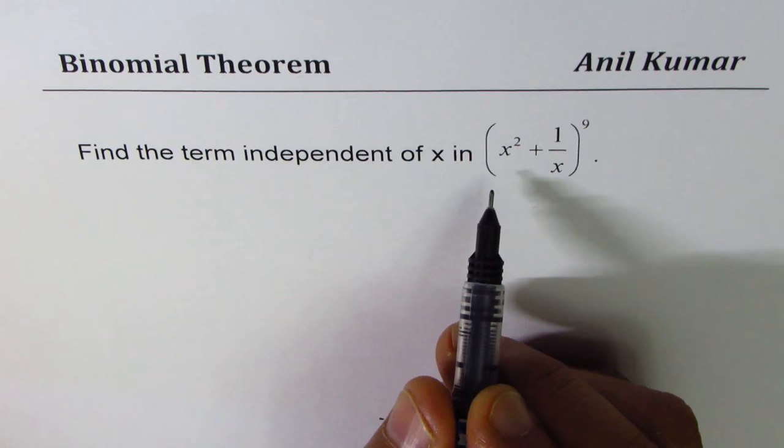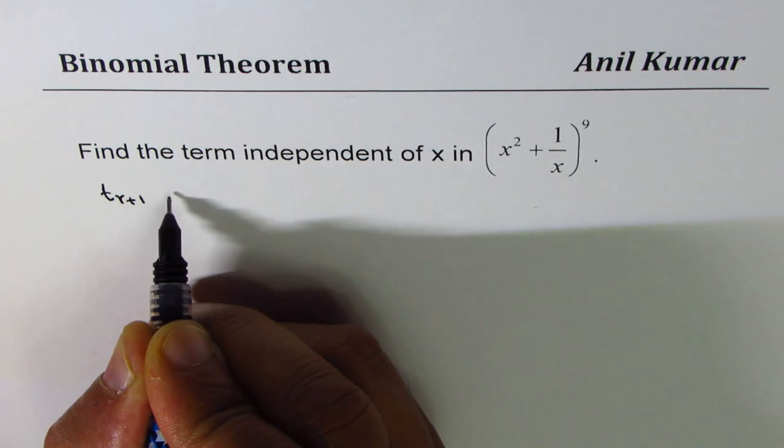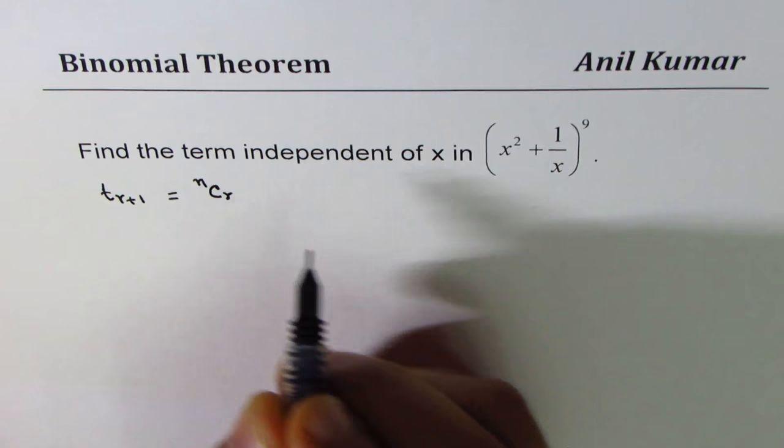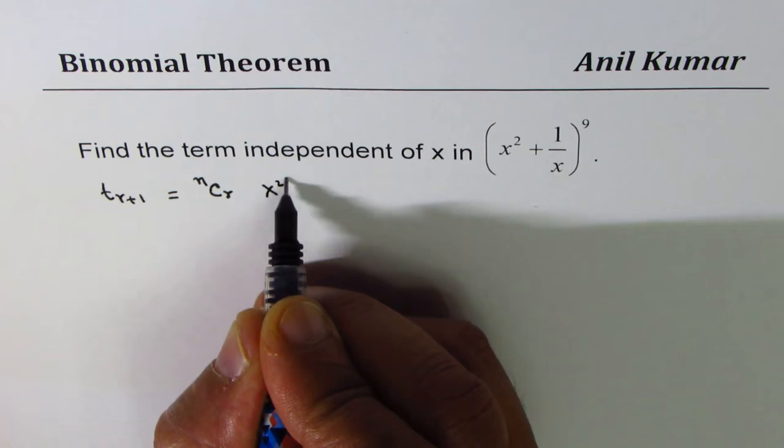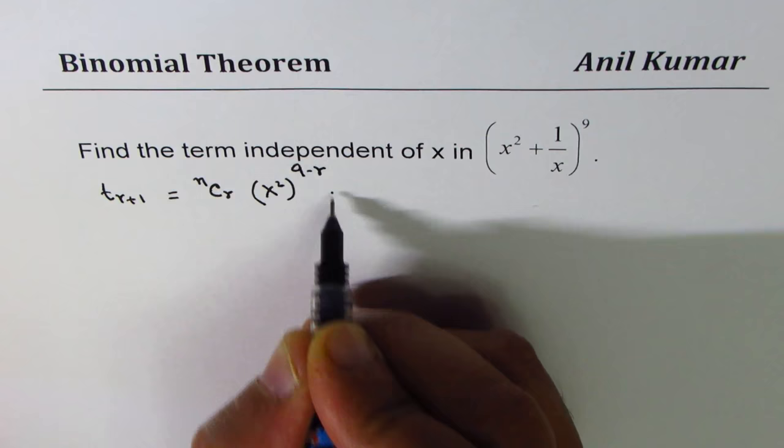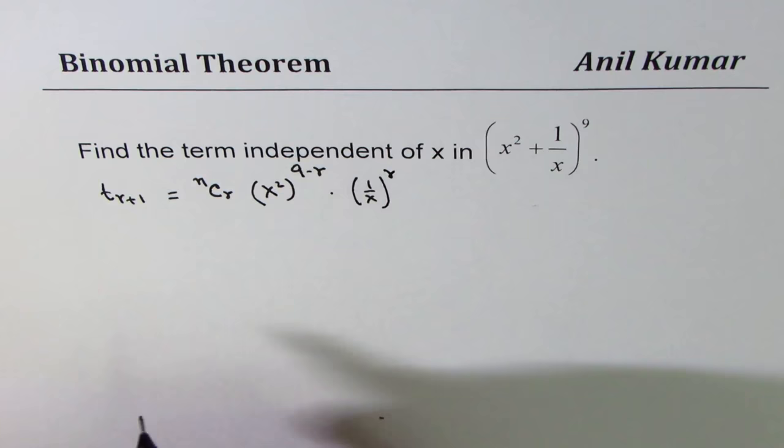Now, in binomial theorem, we can write the general term as t r plus 1 equals nCr times the first term, x squared, to the power of 9 minus r, times the second term, which is 1 over x to the power of r.